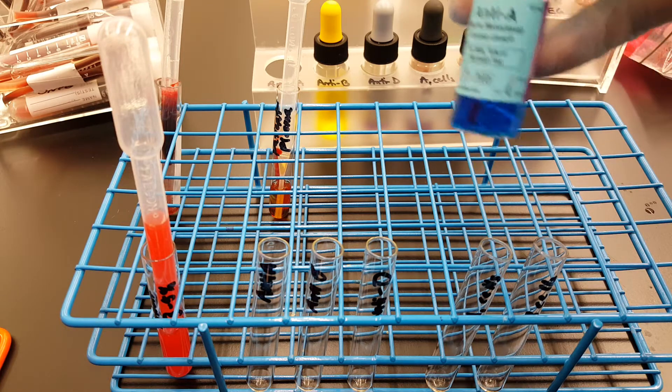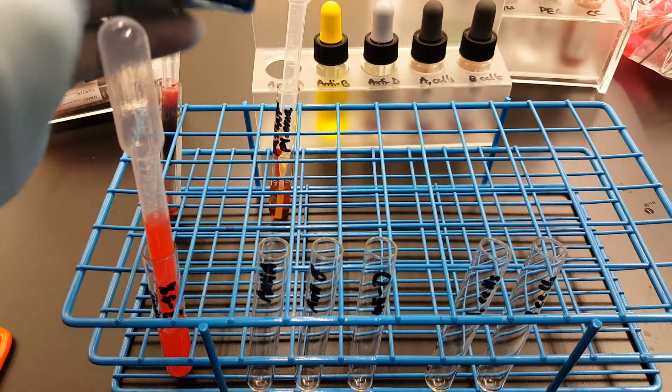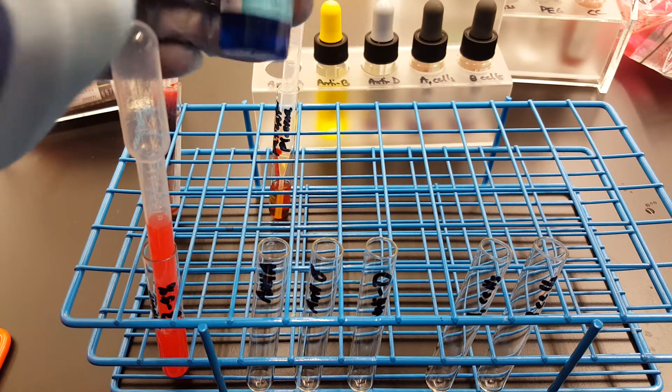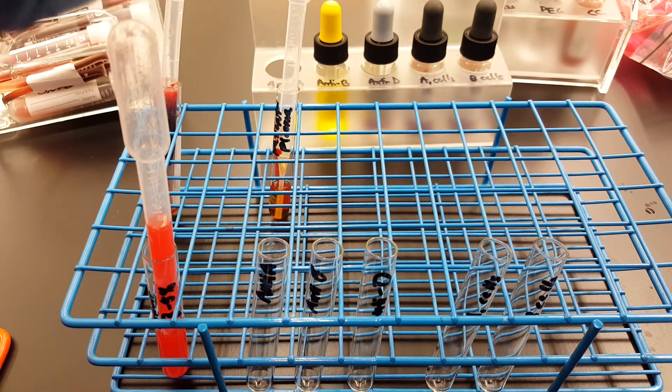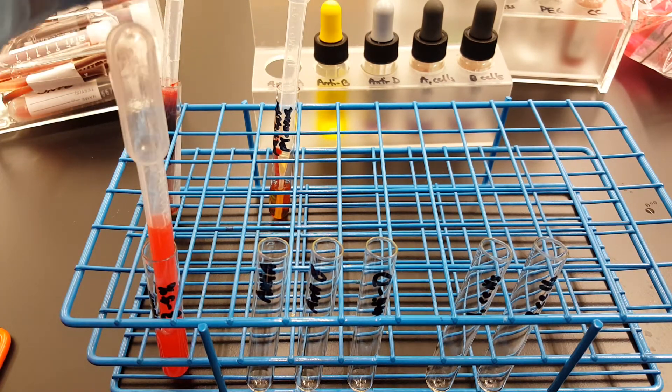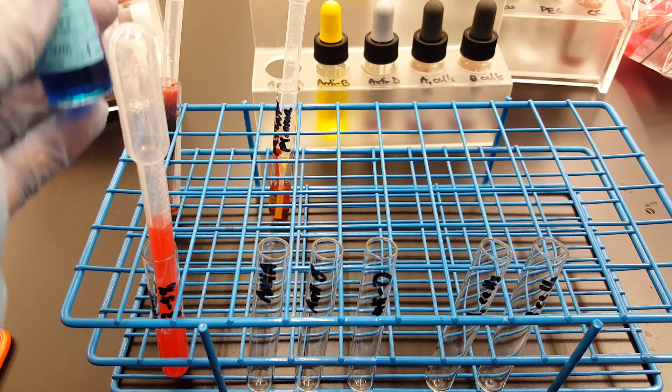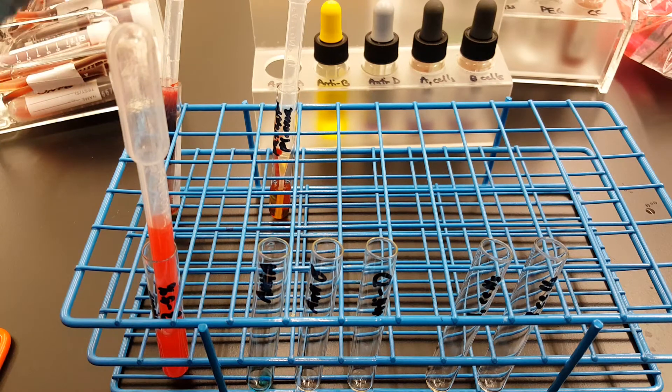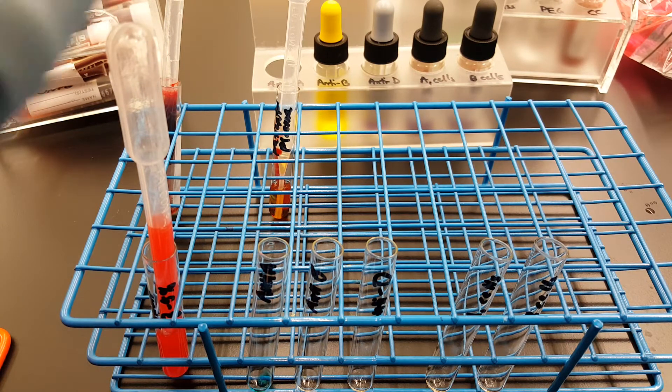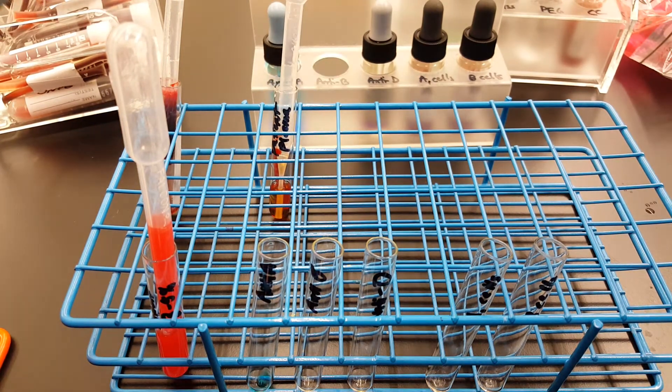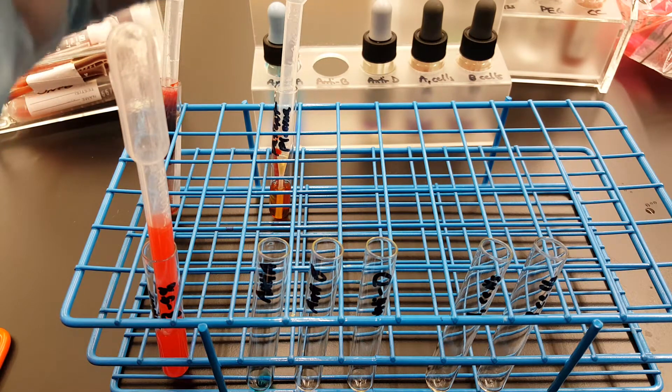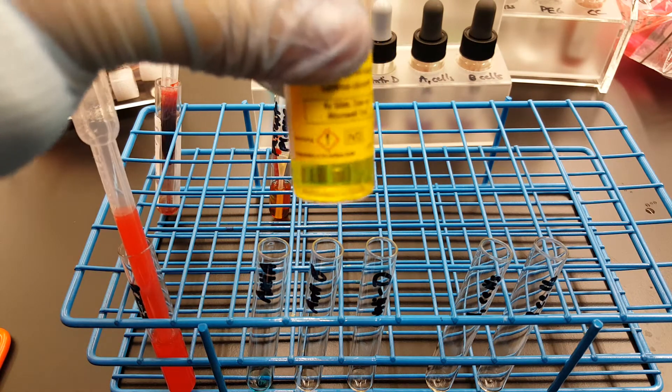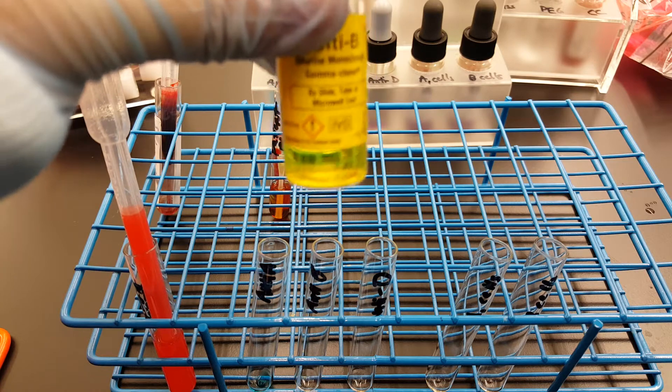So I'm inverting each reagent first so that you know that it's mixed, and I'm going to add a drop of each reagent into each tube. So that was anti-A, part of the forward typing. This is anti-B, which is yellow, and it's part of the forward typing as well.